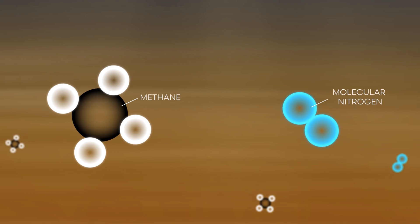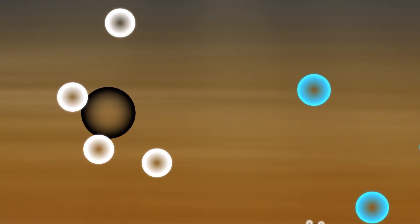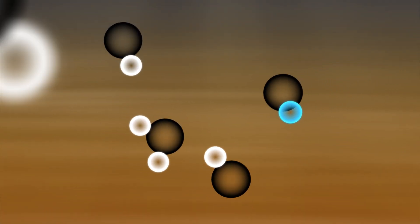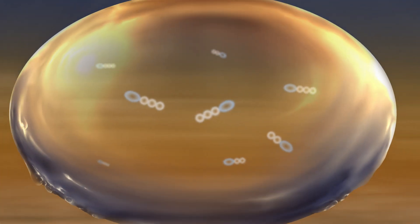Here's how the process works. In Titan's upper atmosphere, methane and molecular nitrogen are broken apart by sunlight and recombine into amphiphiles. Rainfall transports the amphiphiles to a lake, where they form a thin film on the surface.